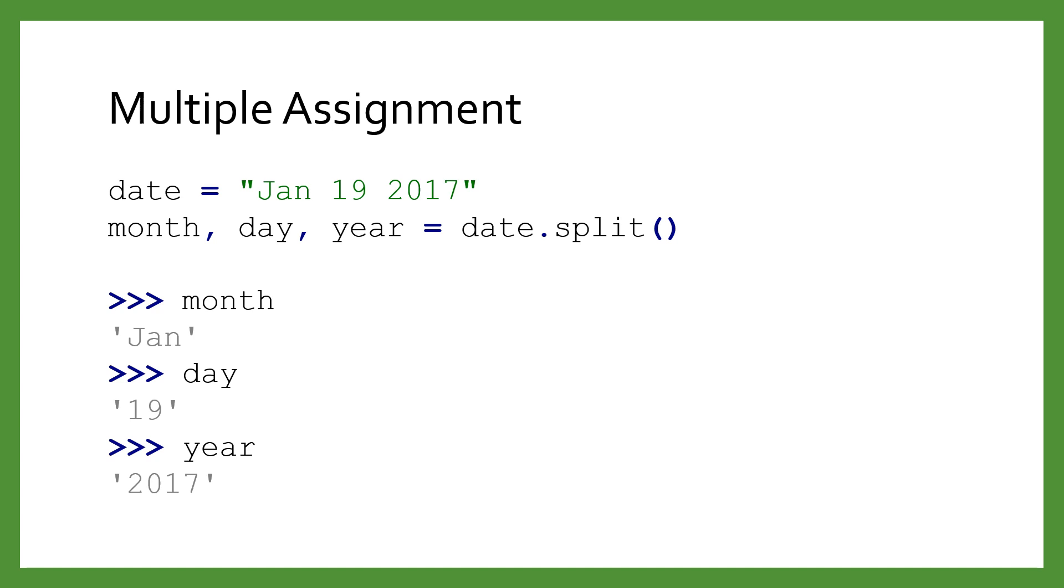So why are tuples useful? The secret is that they can show up when we want to explicitly talk about a specific number of things. For example, you might have a database where every phone number has three parts, divided by dashes. The following code will split the phone number into three pieces.